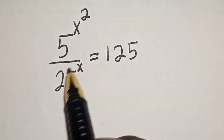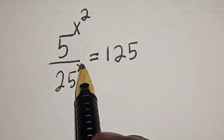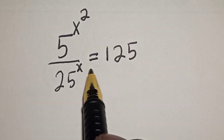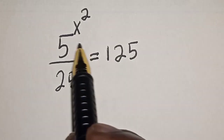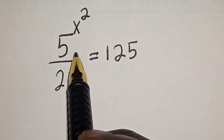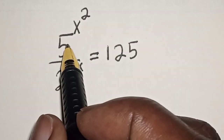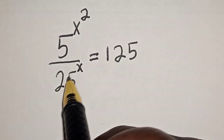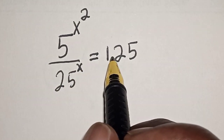5 raised to power s squared divided by 25 raised to power s is equal to 125. What is the value of s? Hi everyone, welcome to my class. In this class, we quickly want to find the value of s from this given equation: 5 raised to power s squared divided by 25 raised to power s is equal to 125.